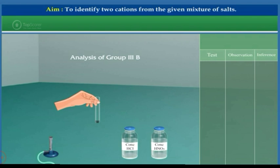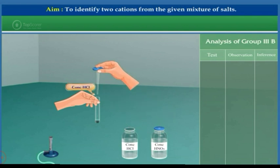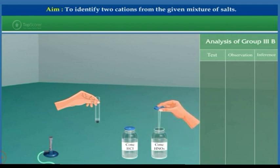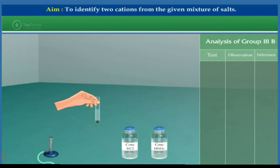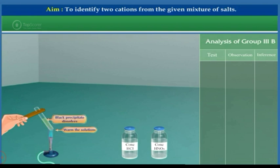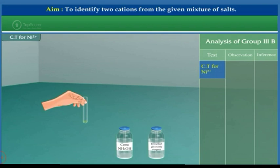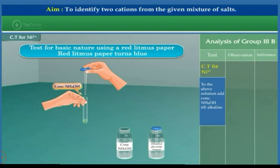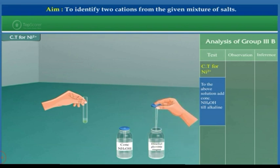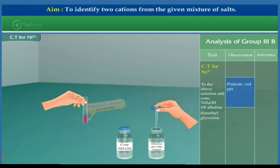Analysis of Group 3B: To the black precipitate, add about 3-4 drops of concentrated hydrochloric acid and 6-7 drops of concentrated nitric acid. This acid mixture is called aqua regia. Warm the solution; the black precipitate dissolves completely. Confirmatory test for nickel: To the above solution, add ammonium hydroxide solution till alkaline, then add a few drops of dimethylglyoxime reagent. A pinkish red colored precipitate confirms the presence of nickel.